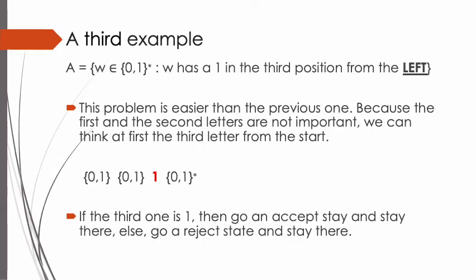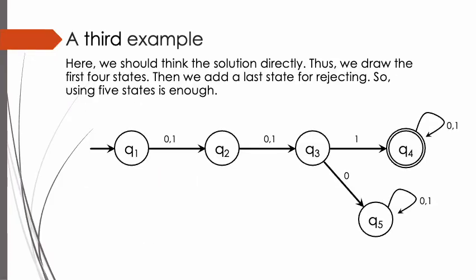A third example. A equals the set of W in {0,1}* such that W has a 1 in the third position from the left. This problem is easier than the previous one because the first and second letters are not important. The first symbol can be 0 or 1, the second symbol can be 0 or 1, but the third one must be 1 only. We need to remember the sequence number of the letters up to the third letter. Thus, we use at least 4 states to check the third symbol, then add a last state for rejecting. We need 5 states total.